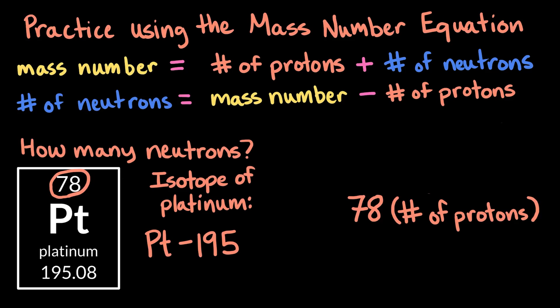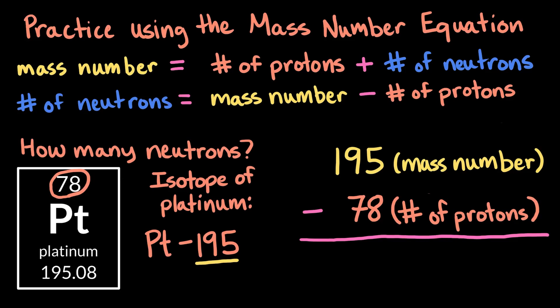Meaning that every platinum atom has 78 protons. We can subtract the atomic number, 78, from the mass number, 195, to get 117. So, this isotope of platinum has 117 neutrons.